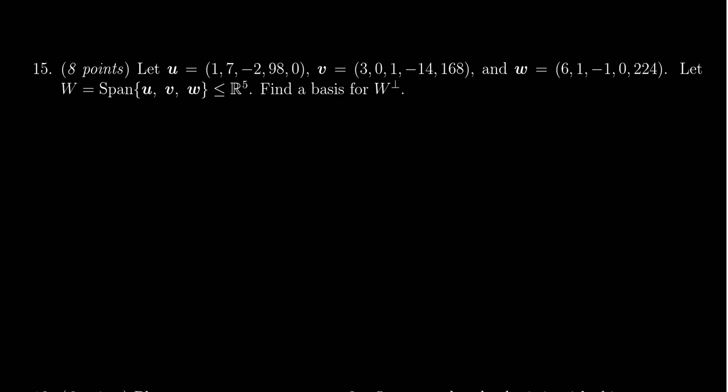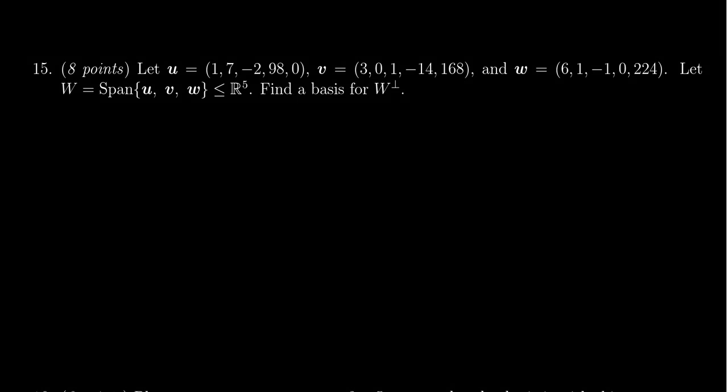In this video, we'll provide the solution for question number 15 from the practice midterm exam number 2 for Math 2270. We're given three vectors u, v, and w, which all live inside of R5. We say that W is the span of these three vectors, so it's a subspace of R5. We need to find a basis for the orthogonal complement of W.